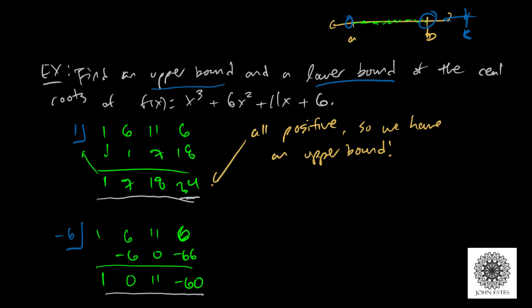Again, that would be disappointing because negative 60 is not 0. But notice here the signs go plus. Now a 0 can be considered plus or negative. In this case I want to make it negative. I'll show you why in a second. Plus, negative. The signs alternate.